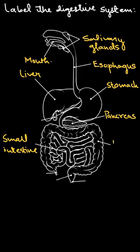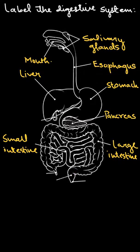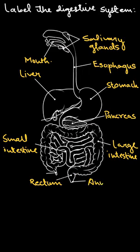So here we have the large intestine. From the large intestine, all the waste material and feces is stored here at the rectum, and is then passed out through the anus. So this is the anus.